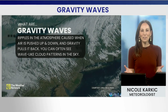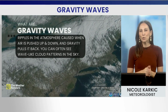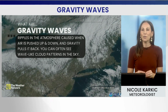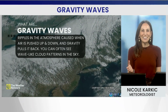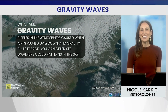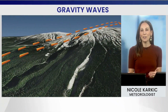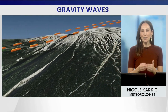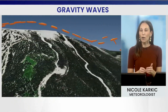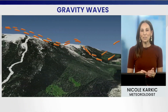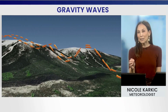What are gravity waves? They're ripples in the atmosphere caused when air is pushed up and down and gravity pulls it back. You can often see wave-like cloud patterns in the sky. They need a trigger such as elevation from the mountains, thunderstorm updrafts, or strong jet streams — and you get the air being forced up, creating a cloud.